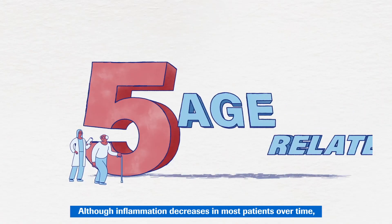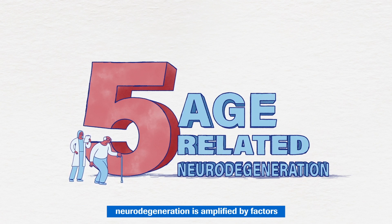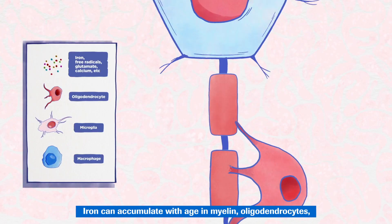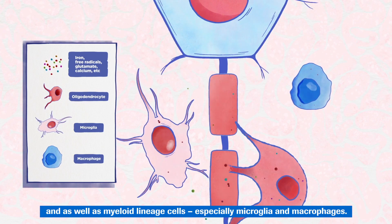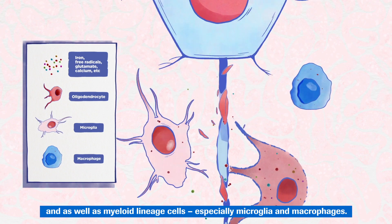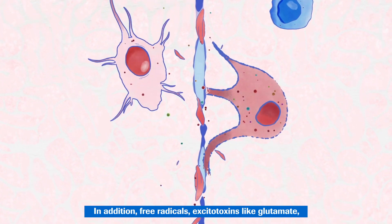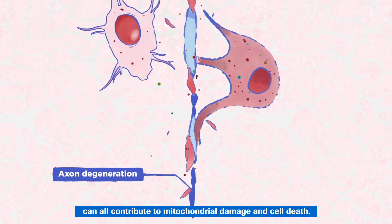Although inflammation decreases in most patients over time, neurodegeneration is amplified by factors related to ageing on top of accumulation of brain injury. Iron can accumulate with age in myelin, oligodendrocytes, as well as myeloid lineage cells, especially microglia and macrophages. In addition, free radicals, excitotoxins like glutamate, increased calcium levels and signalling proteins from activated immune cells can all contribute to mitochondrial damage and cell death.